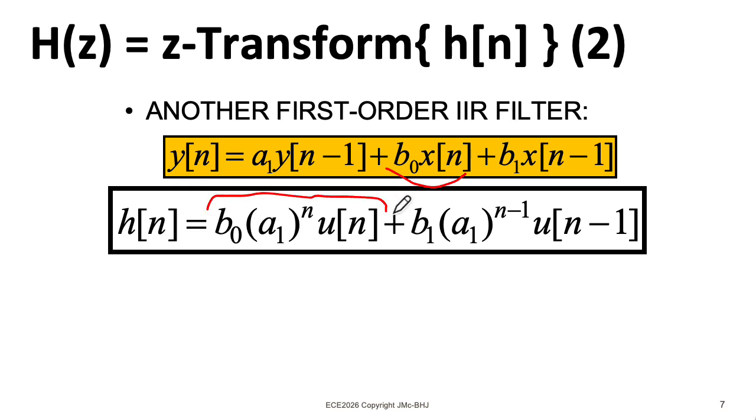So from the b_0 x[n] term here, I wind up with this first term of the impulse response, which is what we had before. And from the second term, I'll have a similar kind of form, except I just have b_1 instead of b_0. And because the input is delayed by one, my output is delayed by one. So I have n minus one here and here. That's the beauty of the property of time invariance.